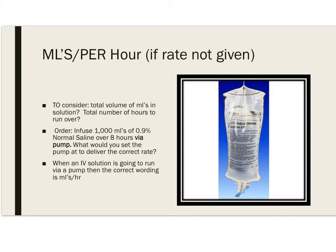So if you're going to administer IV fluids via an infusion pump, and the physician did not write in the order what the rate was to be, then we need to calculate it. When an IV solution is going to run on an IV pump, the correct wording is mLs per hour. We have to consider the total volume of mLs in the solution — for instance, you can see here there are 1,000 mLs.